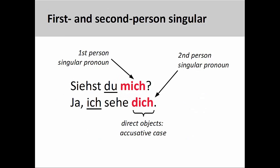Let's see how some of these accusative personal pronouns function in a sentence. In the two sentences you see here: Siehst du mich? Ja, ich sehe dich. Do you see me? Yes, I see you. Both pronouns are the direct objects of the verb sehen, which requires them to be in the accusative case. For contrast, the subjects of each sentence, which are underlined, are in the nominative case. Here, the distinction between nominative and accusative forms is very clear.